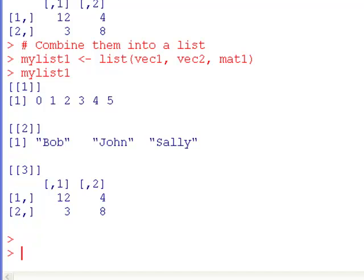And you'll see that when it prints it out, it has these double brackets with a number inside. So this is my first item in the list. Double bracket one double bracket is my vector of numbers. Double bracket three double bracket is my matrix that I wanted. And notice they're all now attached to mylist1.